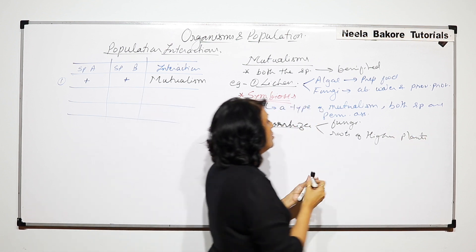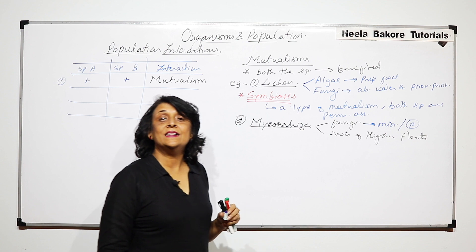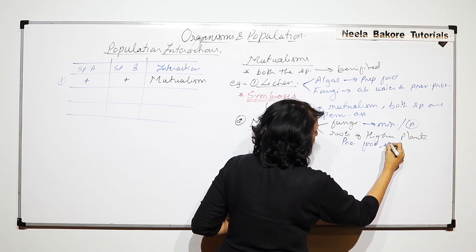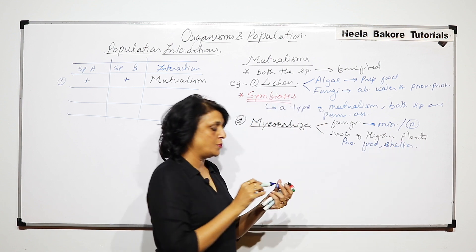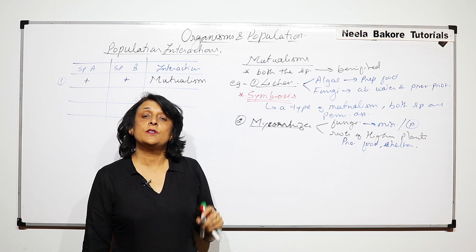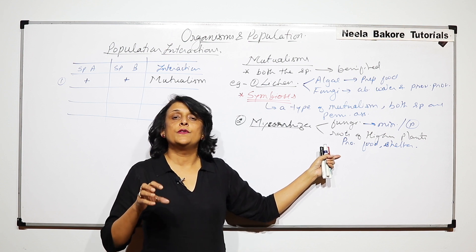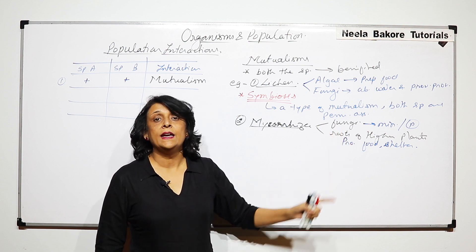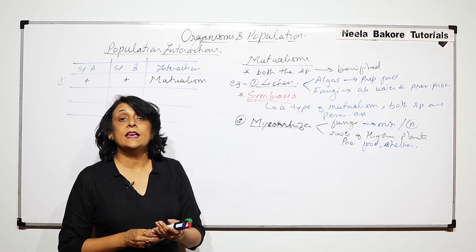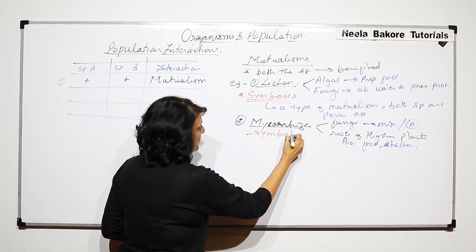In this case, the fungus is going to absorb minerals, especially phosphorus. And in turn, the plant is going to provide food, water and shelter. So food and shelter are provided by the plant and minerals are absorbed by the fungus. It is seen that if from the root of the higher plant we remove these fungi, the growth of the plant gets stunted. So that means this association is essential for normal growth of plants. And this is also symbiotic relation.